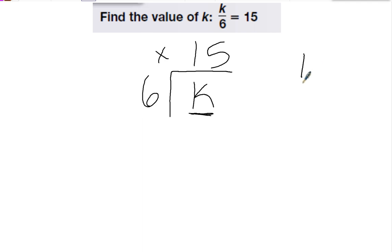So here I have 15 times 6. 6 times 5 is 30. Carry my 3. 6 times 1 is 6. Plus 3 is 9. So my answer should be 90.